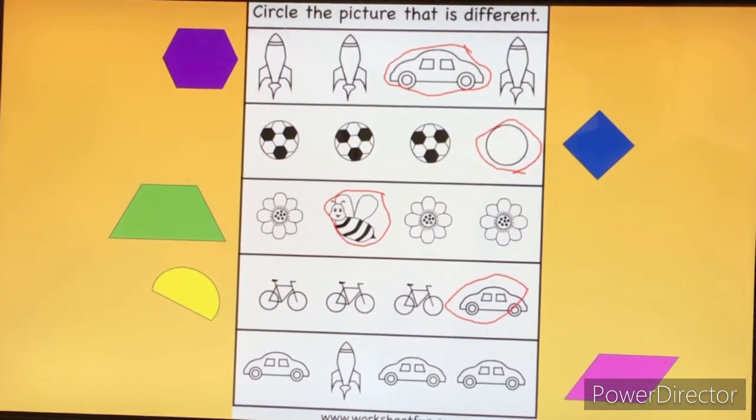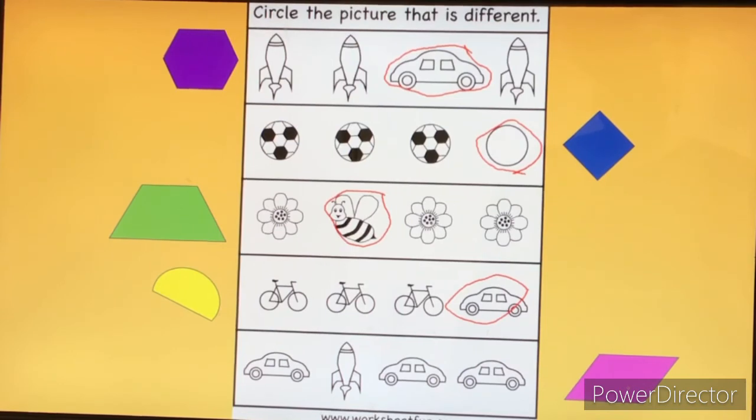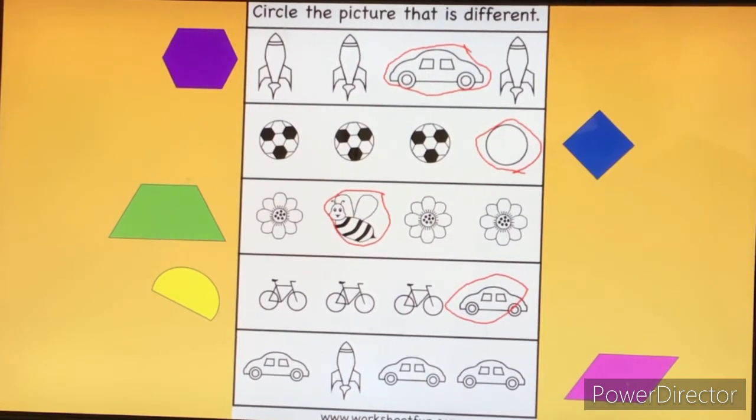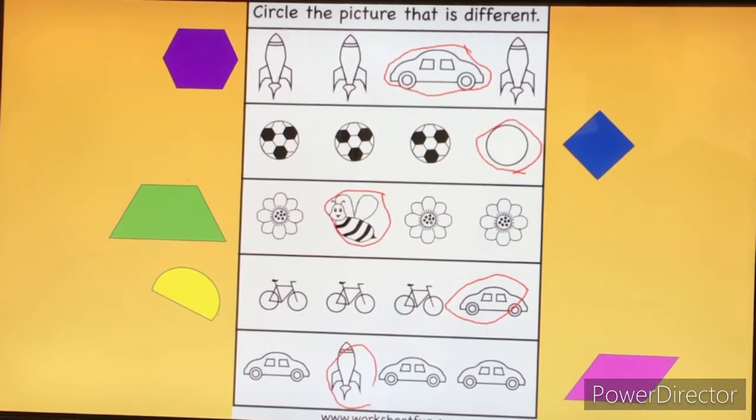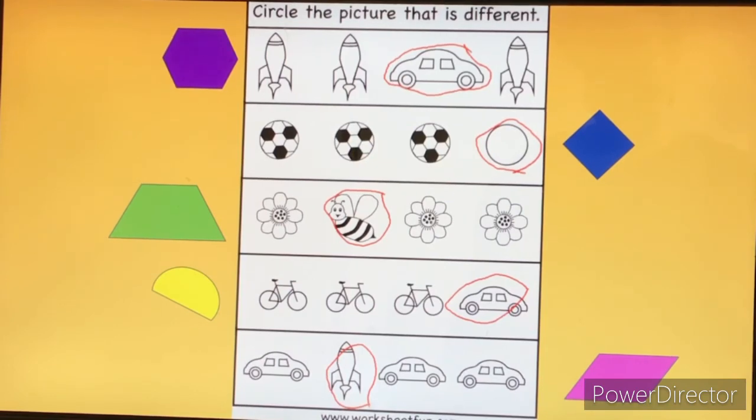Let's move down to the pink rhombus. Which one of these friends is not the same? Did you say the rocket ship? Excellent finding the differences friend. Practice finding what's different in your home. Have fun.